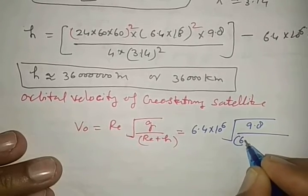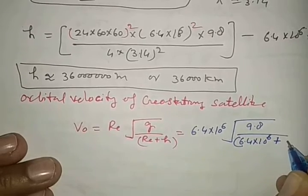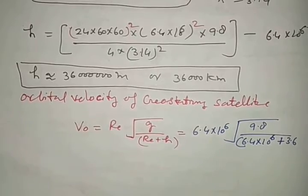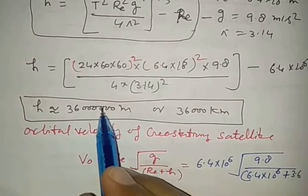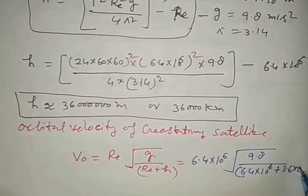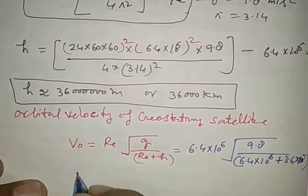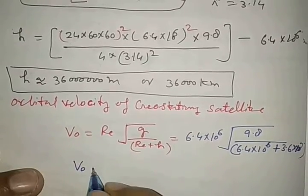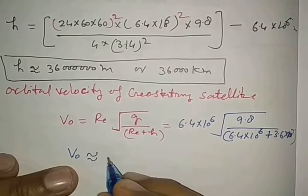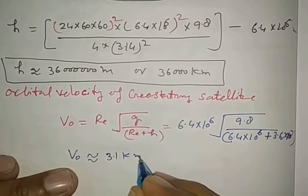R_e is 6.4 × 10^6, R_e + height is 3.6 × 10^7 here. After calculating this, orbital velocity of a satellite is approximately 3.1 km per second.